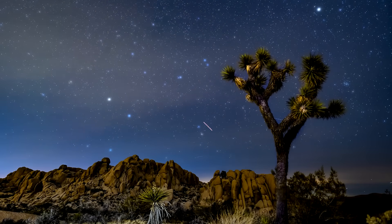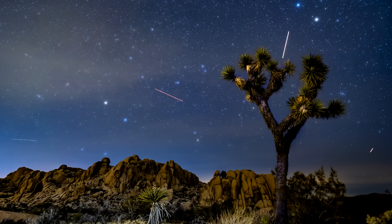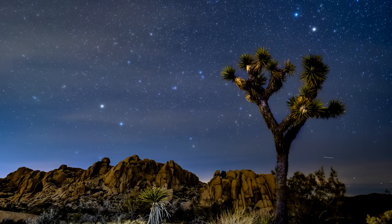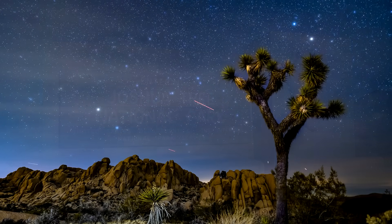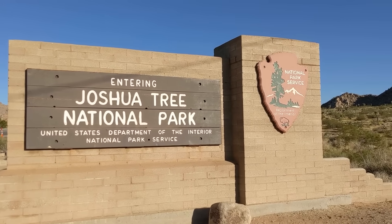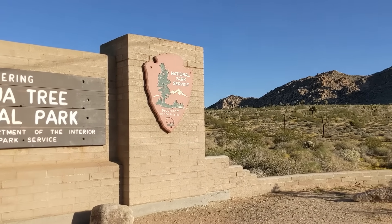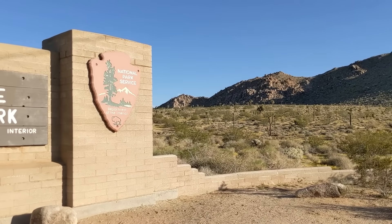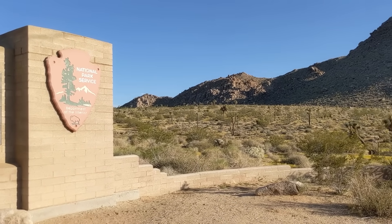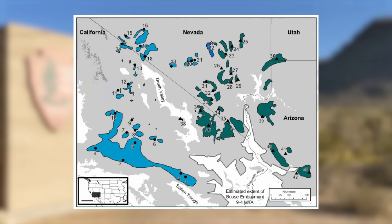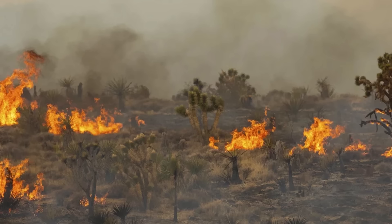Joshua trees are one of the National Park Service's most iconic species. Joshua Tree National Park in Southern California bears their name most prominently, but they can be found across the Mojave Desert into Nevada, Arizona, and Utah as well.